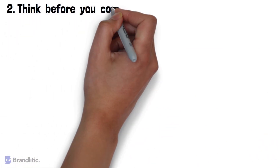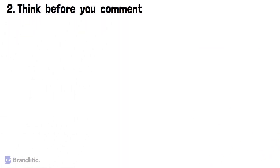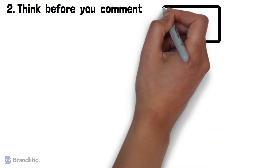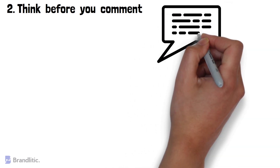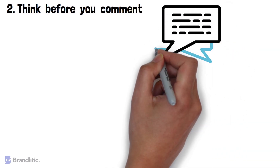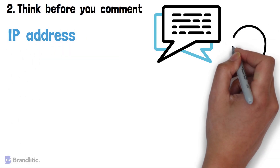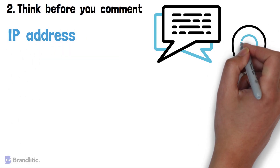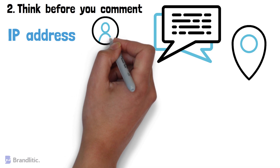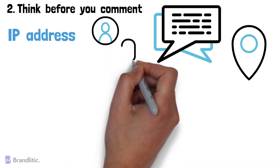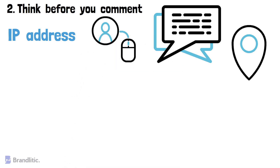2. Think before you comment. Forums or news websites that allow anonymous or pseudo-anonymous comments still collect data about you like your IP address, which can reveal your location and identity. If you feel the need to leave comments on websites, never enter personal details that could result in identity theft. Don't log in with your social media accounts, and use a VPN to change your IP address.